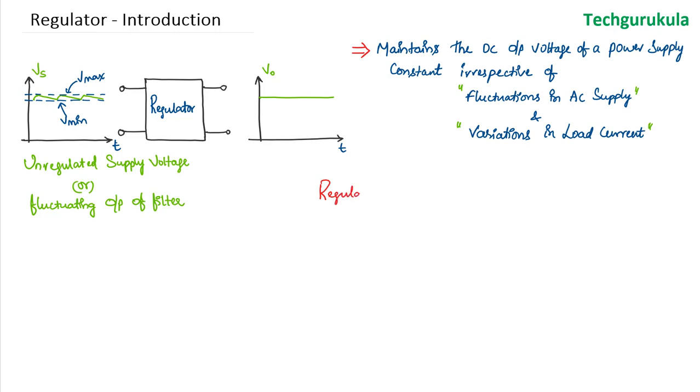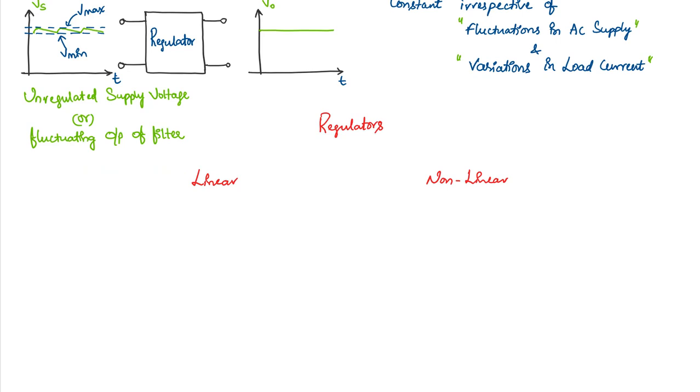Regulators can be classified into broadly two categories: linear regulators and non-linear regulators. This is divided based on the active devices region of operation. In linear regulators the transistor will be used in linear region of operation, whereas in non-linear regulators we use the transistors in cutoff and saturation modes of operation. In fact non-linear regulators are used in switch mode power supplies, so we can say this is for switching regulators.